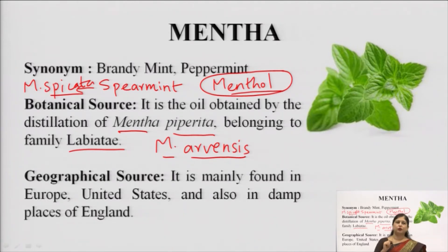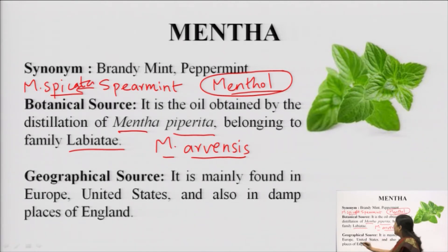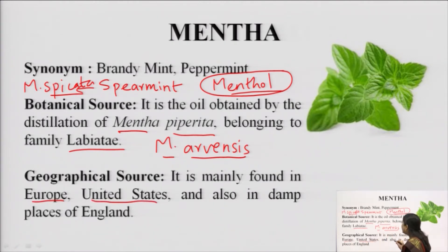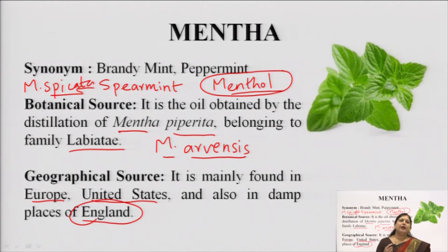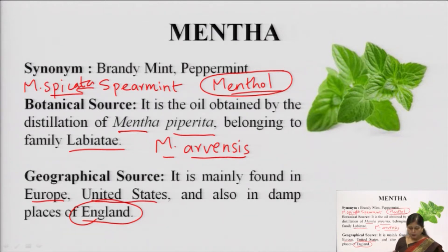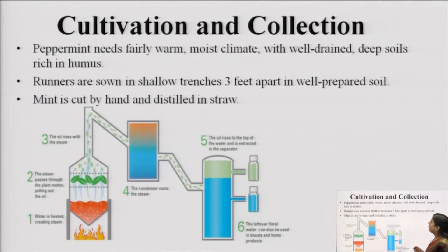The geographical source of Mentha piperita — peppermint — is basically European countries and the United States. It is found in many damp places, specifically in Europe, where it grows wild. Just as vinca grows wild in India, in England mentha grows as a wild plant. So it is essentially a European drug.